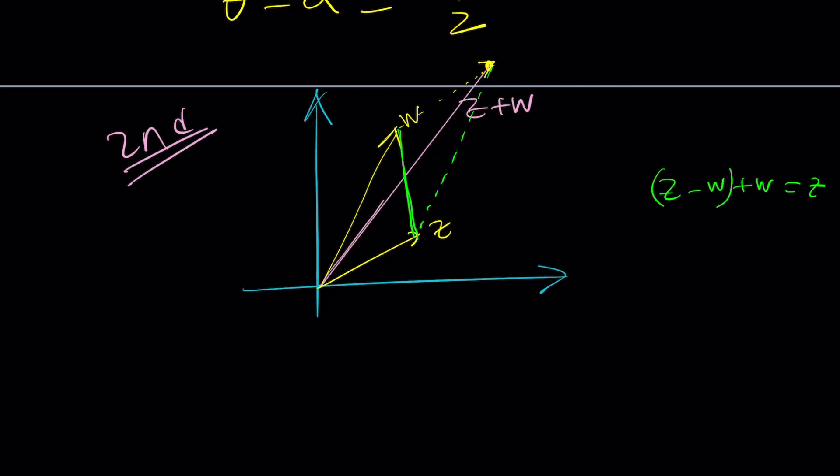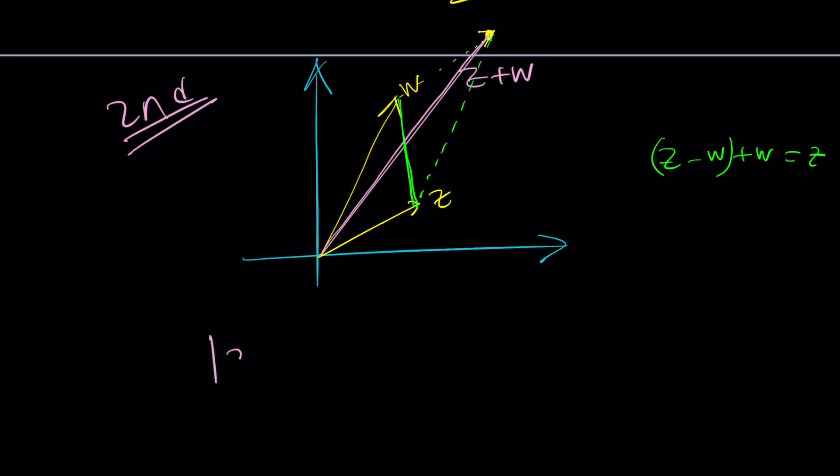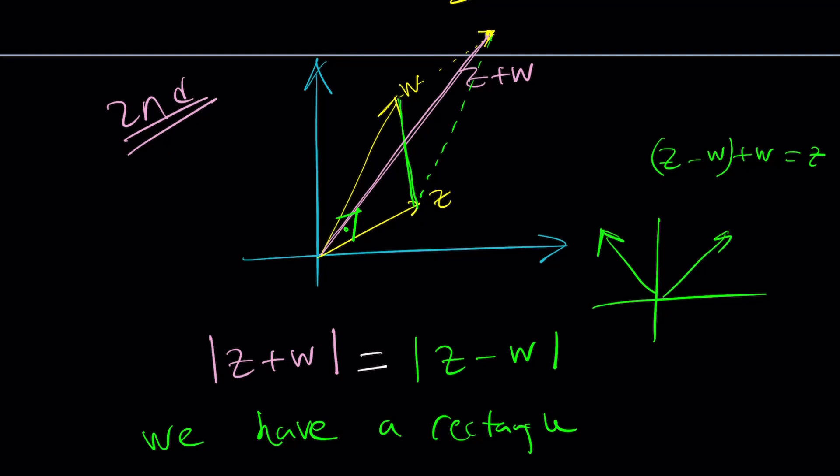Now, what do you want? You want those lengths to be equal. They don't look equal in this case, but here's what it means. The length of the pink vector is supposed to equal the length of the green vector, which is the difference. How is that possible? You're thinking about two diagonals being congruent, and when are the two diagonals congruent in a quadrilateral? If you said rectangle, yes. So we have a rectangle, meaning that this is supposed to be 90 degrees. It doesn't look like that, but when it is 90 degrees, guess what you're looking at?